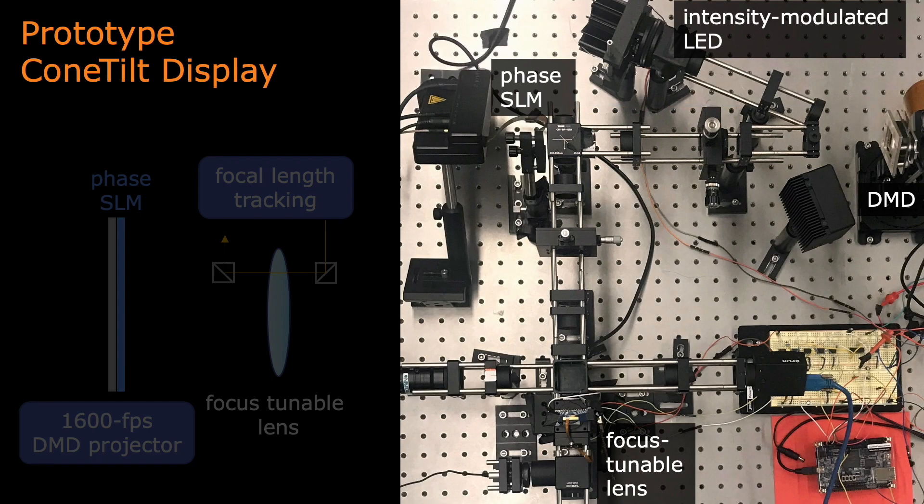Let me walk you through the optical path. The light first gets emitted by the LED, reaches the DMD, gets relayed to the phase SLM, and finally passes through the tunable lens to our eyes.